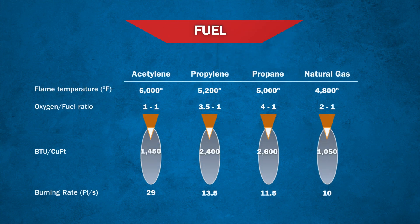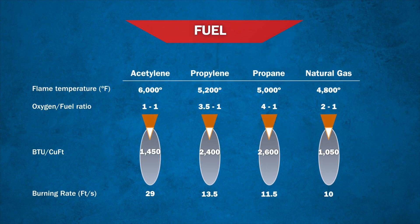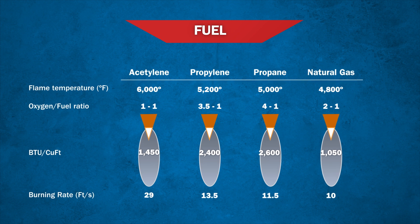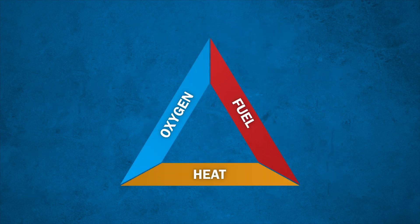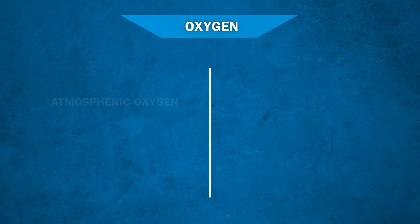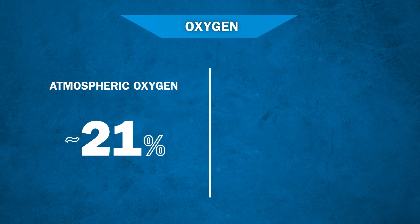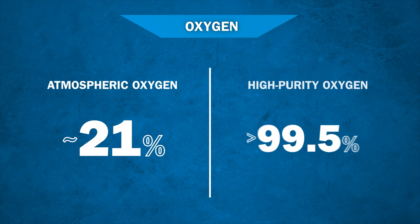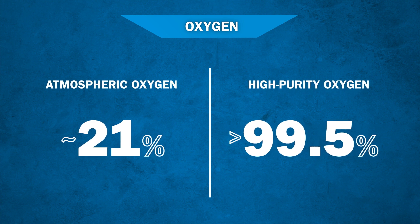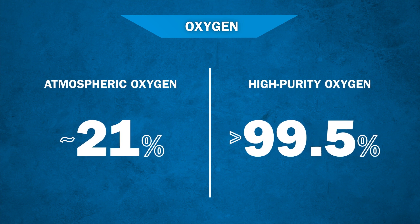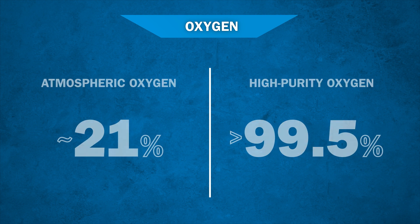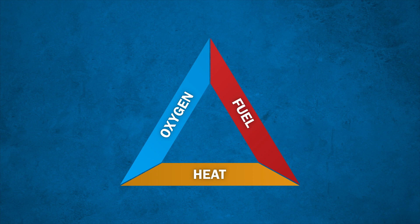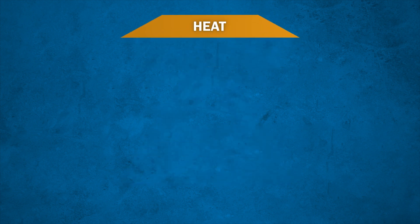There are various types of fuel gases that can be used in an oxyfuel operation, which each have different characteristics relating to combustion. The oxygen available in the air we breathe is about 21% pure by volume. High purity oxygen, like the kind used in oxyfuel operations, is greater than 99.5% pure by volume. For steel to burn, you need more than simple atmospheric oxygen. High purity oxygen is a combustion accelerant.